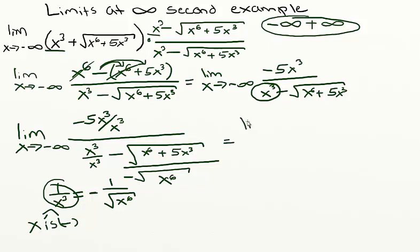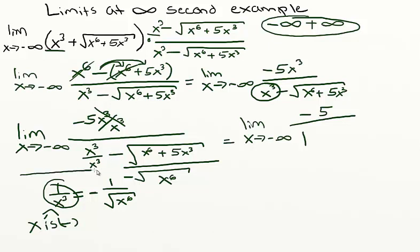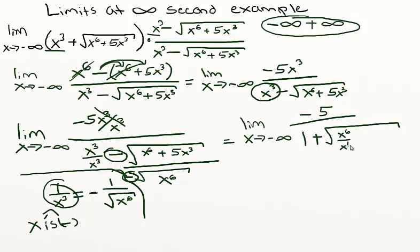Now we can actually take the limit as x approaches negative infinity. The x cubed terms in the numerator cancel out, giving us negative 5. In the denominator, x cubed over x cubed gives us 1, and we have two negatives — this negative and this negative — that make a positive. So we'll get 1 plus the square root of x to the 6th over x to the 6th plus 5x cubed over x to the 6th.